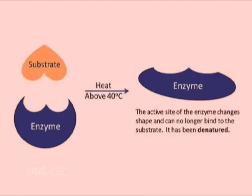Increasing temperature also increases the vibrational energy that molecules have, and this energy puts strain on the bonds that hold the molecules together. More bonds, especially the weaker hydrogen and ionic bonds, will break because of this strain. This breaking of bonds within the enzyme will cause the active site to change shape. This change in shape means that the active site is less complementary to the shape of the substrate, making it less likely to catalyze the reaction. Eventually, the enzyme will become denatured and will no longer function, and the substrate is no longer able to bind to the altered active site.